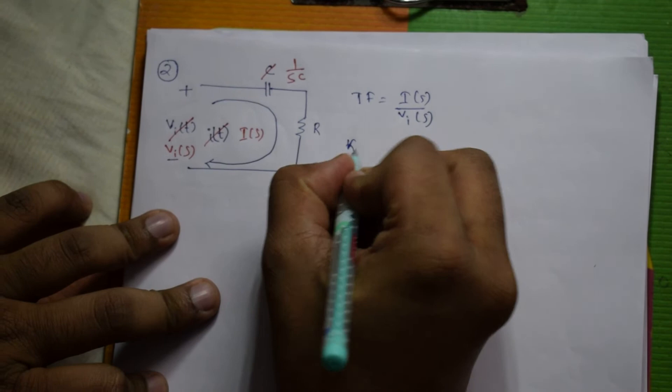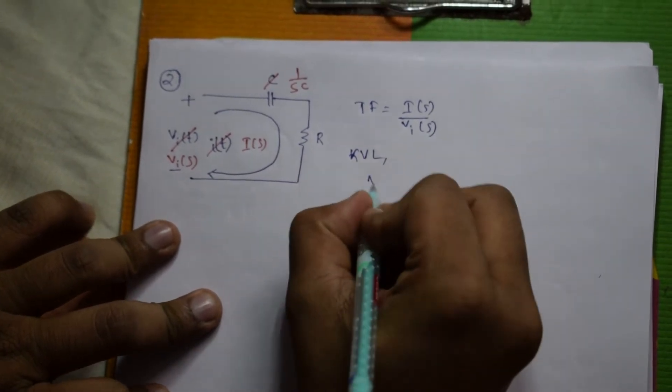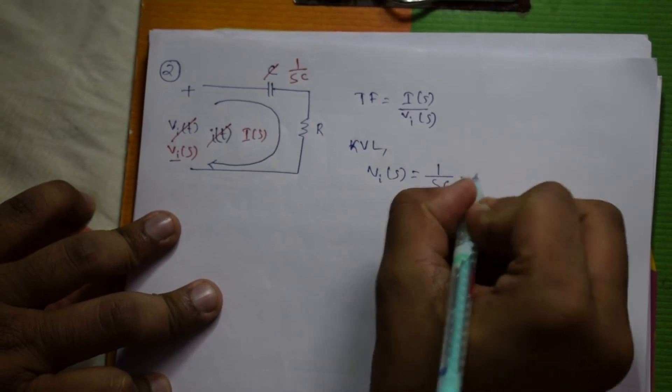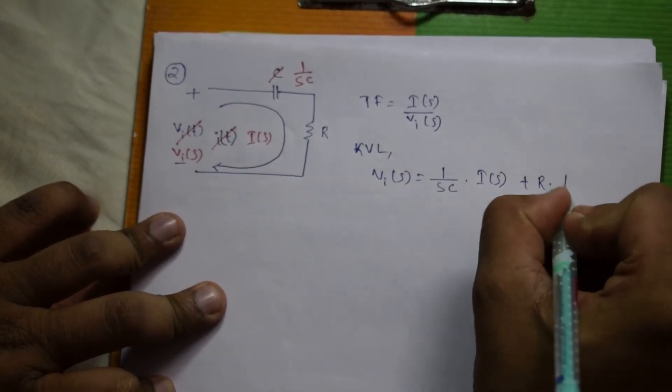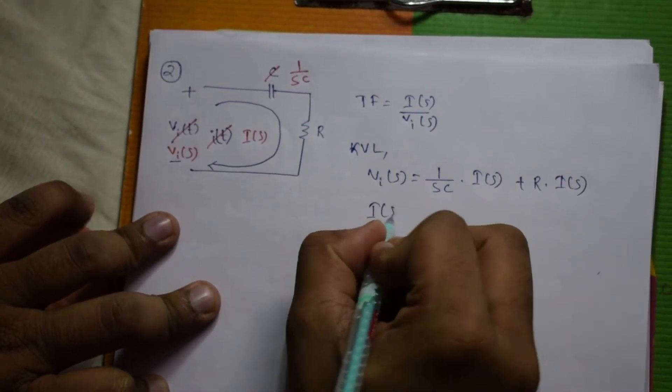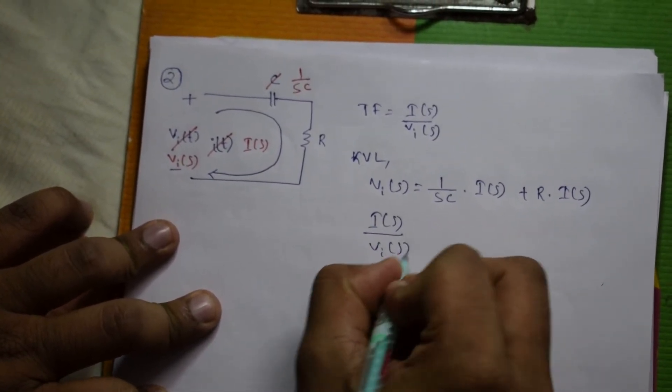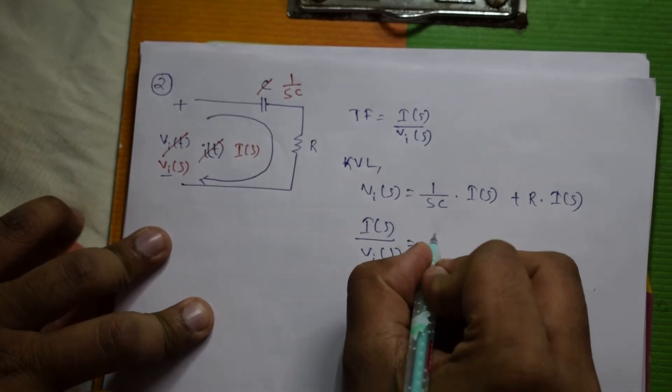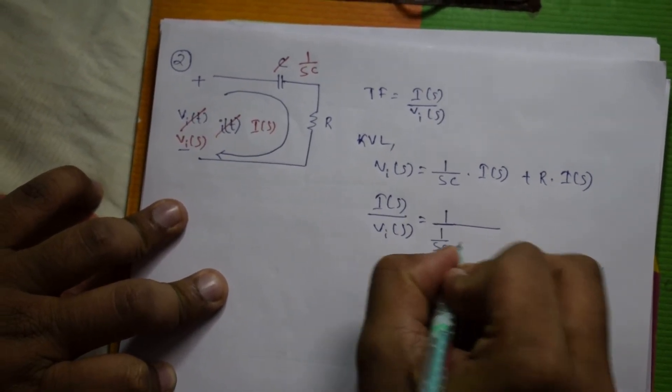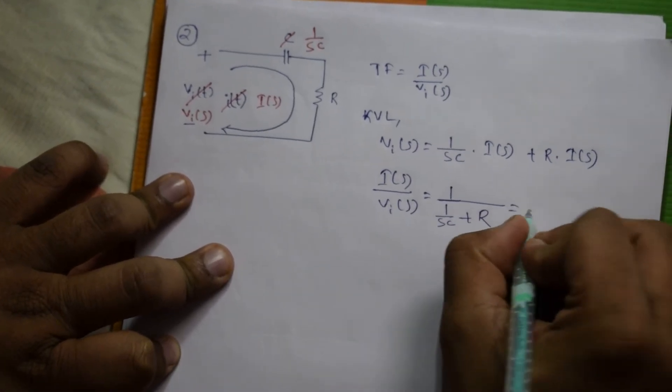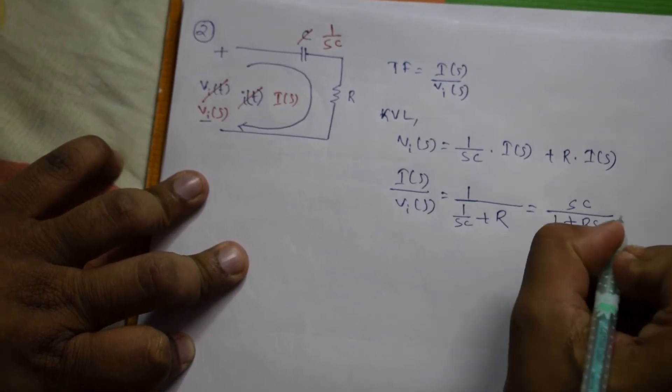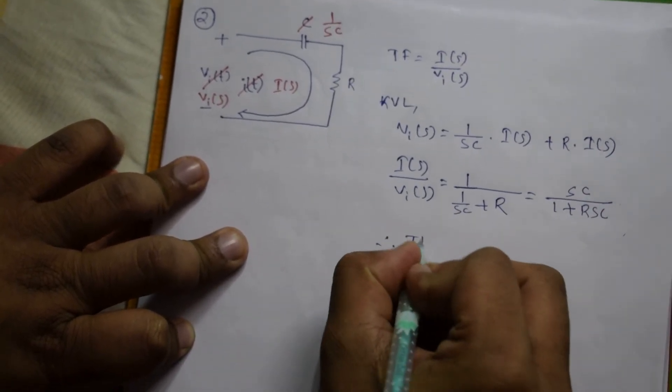Now applying KVL in this loop, we will get Vi(S) equals to 1 by SC into I(S) plus R into I(S). So from here, I(S) by Vi(S) equals to 1 by 1 by SC plus R, equals to SC by 1 plus RSC. So this is the required transfer function.